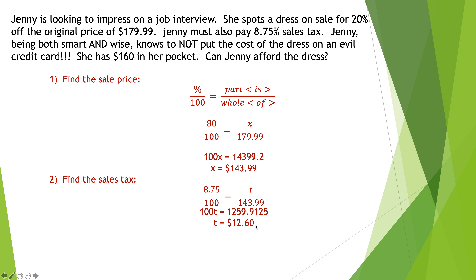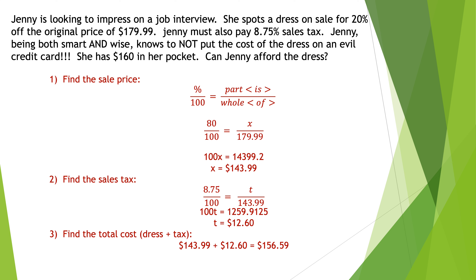Can Jenny afford this dress? I add the dress plus the tax: $143.99 + $12.60 = $156.59. This time Jenny has $160 in her pocket, so yes, she can afford it again. Those are two much more involved percent problems where we used algebra to help figure them out. The next slide begins geometry, so this is a convenient point to break and finish our second video for Lesson 12.